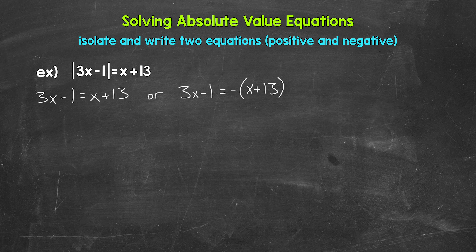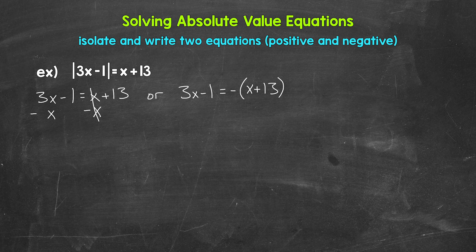Now that we have our two equations, we can solve. Let's start with 3x minus one equals x plus 13. When we have an equation with variables on both sides, we want to get the variable on one side of the equation. Let's subtract x from the right side, which means we need to subtract x from the left side as well. These x's cancel each other out, leaving 13 on the right. On the left side, 3x minus x gives us 2x, and then we have minus one. Now we have 2x minus one equals 13.